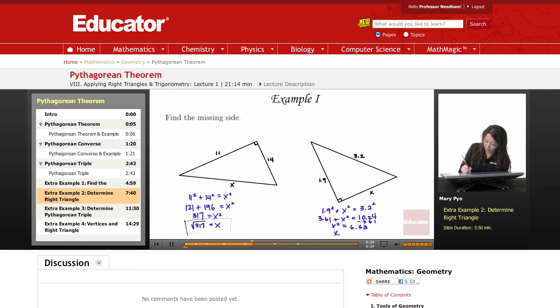Okay, and then x is going to equal square root of 6.63. And you can just use your calculator to figure that out.